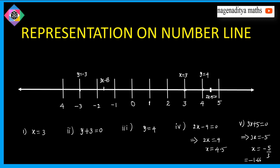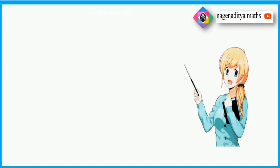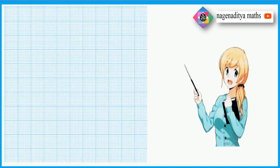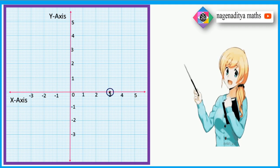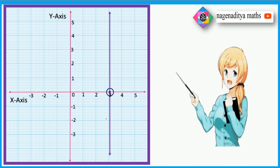So all five problems are represented on the number line. Now we have to represent the given lines on the Cartesian plane, that means on a graph paper. We take a graph paper and draw x-axis and y-axis. The first question is x is equal to 3, so we put a point at x equals 3 and draw a line parallel to the y-axis.